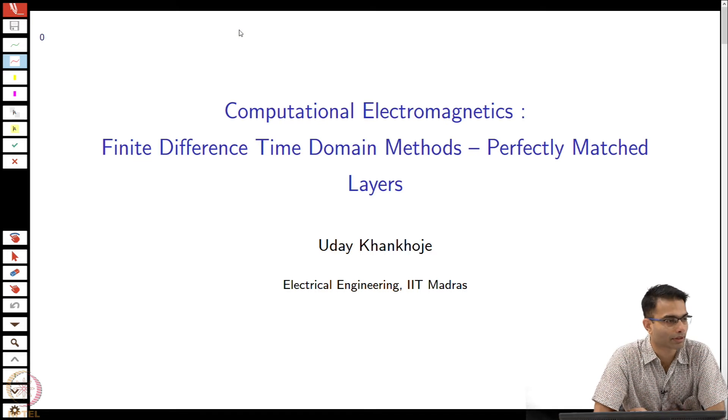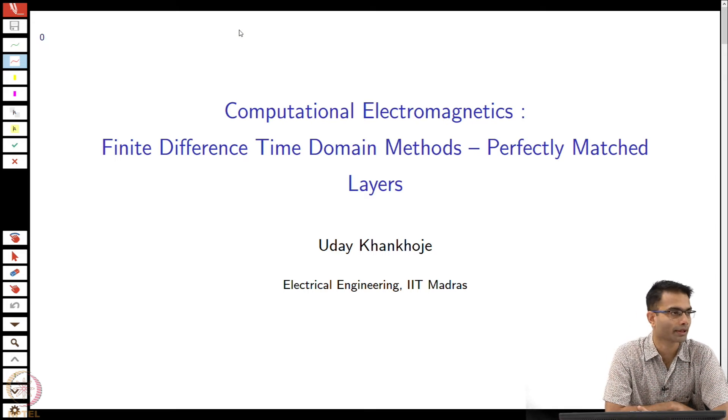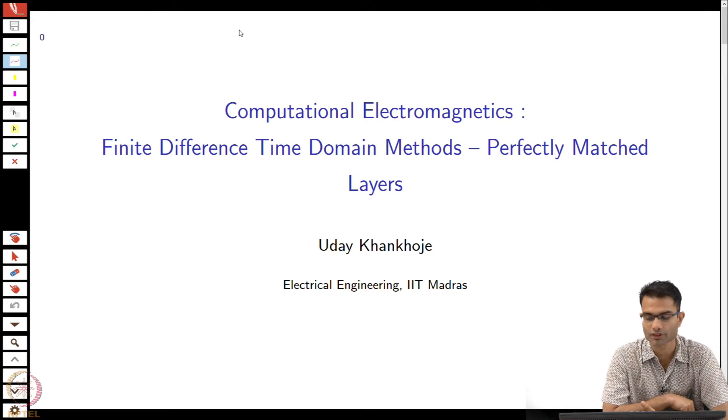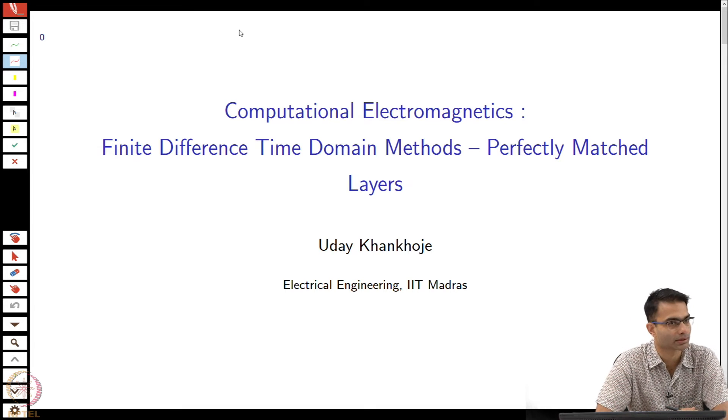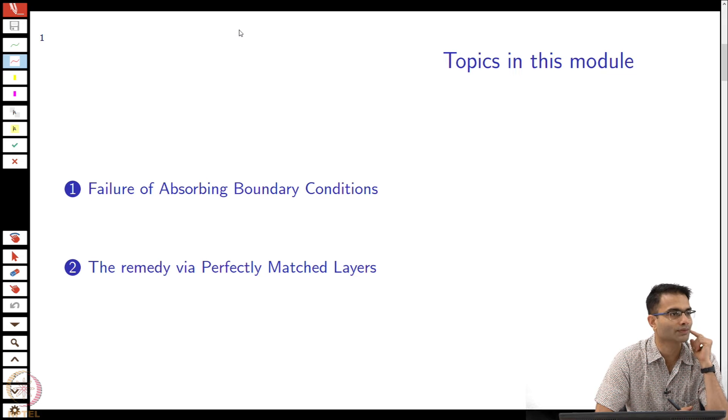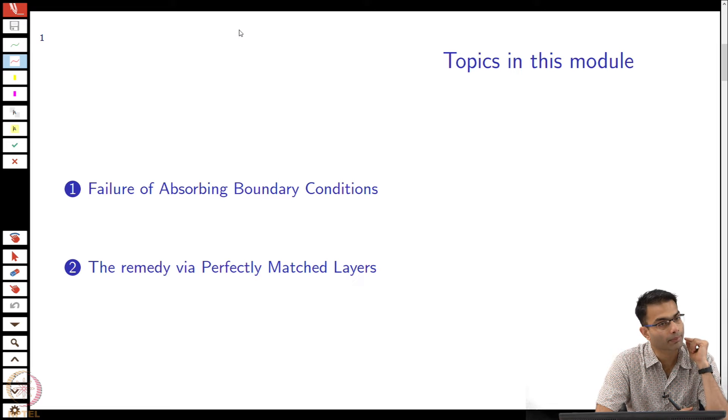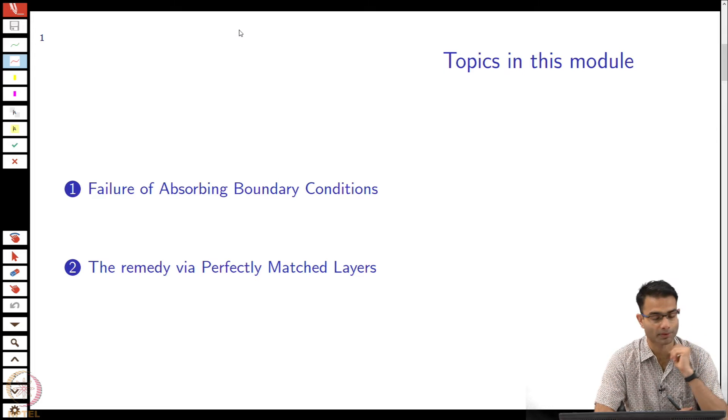So, the next very important module that we are going to talk about is implementing, first conceptualizing and then implementing what are called perfectly matched layers. To motivate this, first we will start with why do absorbing boundary conditions fail and then the remedy. So you have some motivation and then we come to perfectly matched layers.